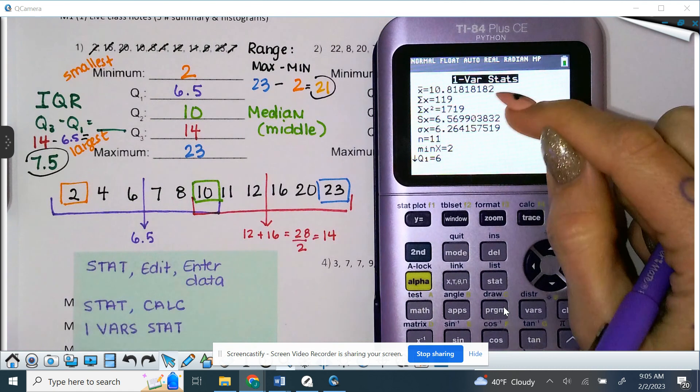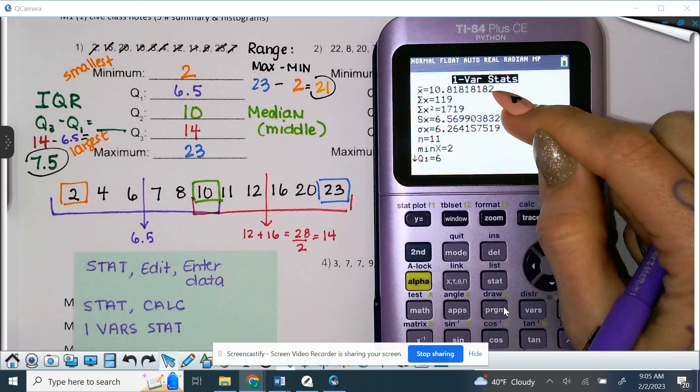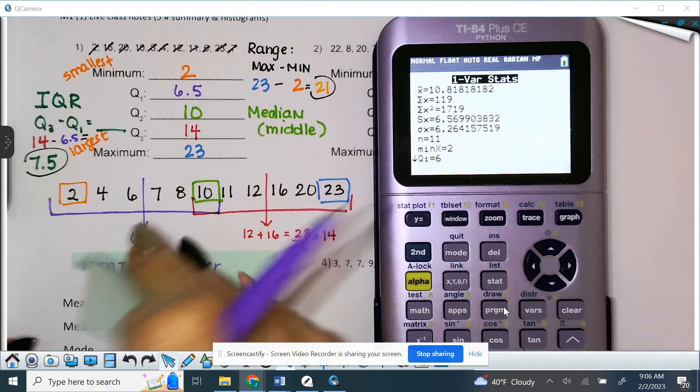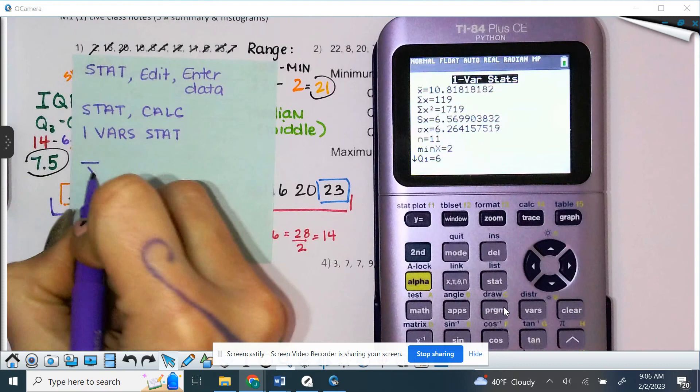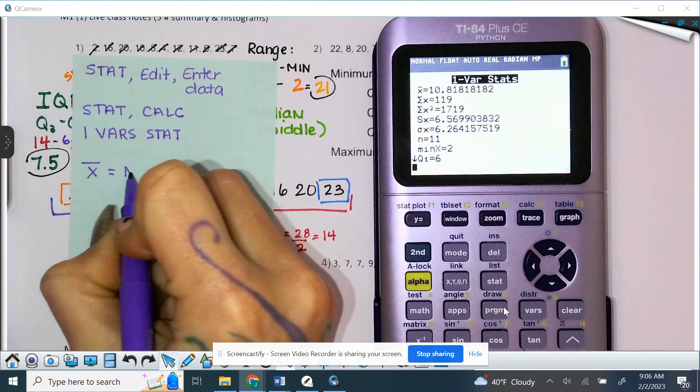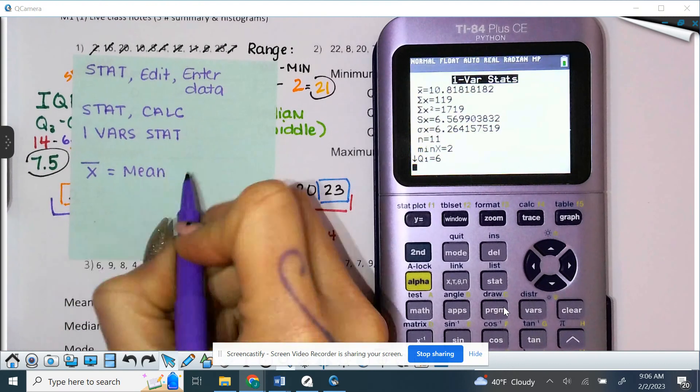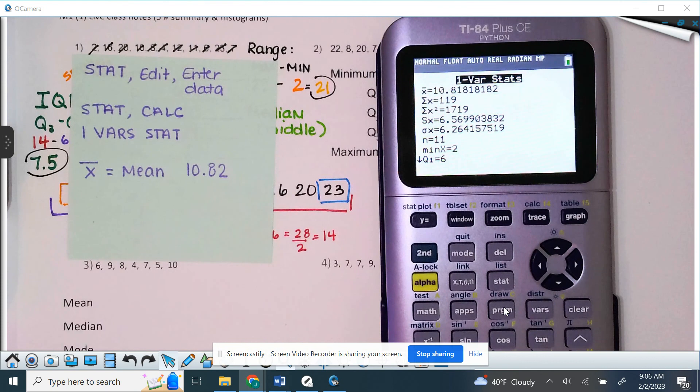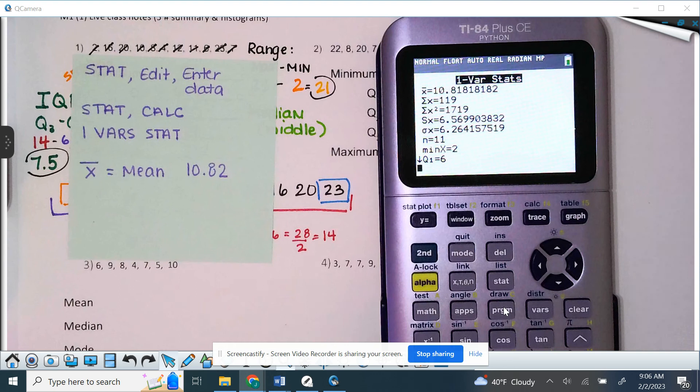So, now we hit stat again. Over to calc. And we're going to do one VAR stat. And then push all the way through until you get to calculate because that's telling it to go. Also, I get excited and I talk really fast. So, if you need me to slow down, give me a ding ding or something to let me know. Now, X bar is going to be your mean. So, X bar is your mean, which we did not do up here. But you are going to need it later. So, we'll go ahead and start.